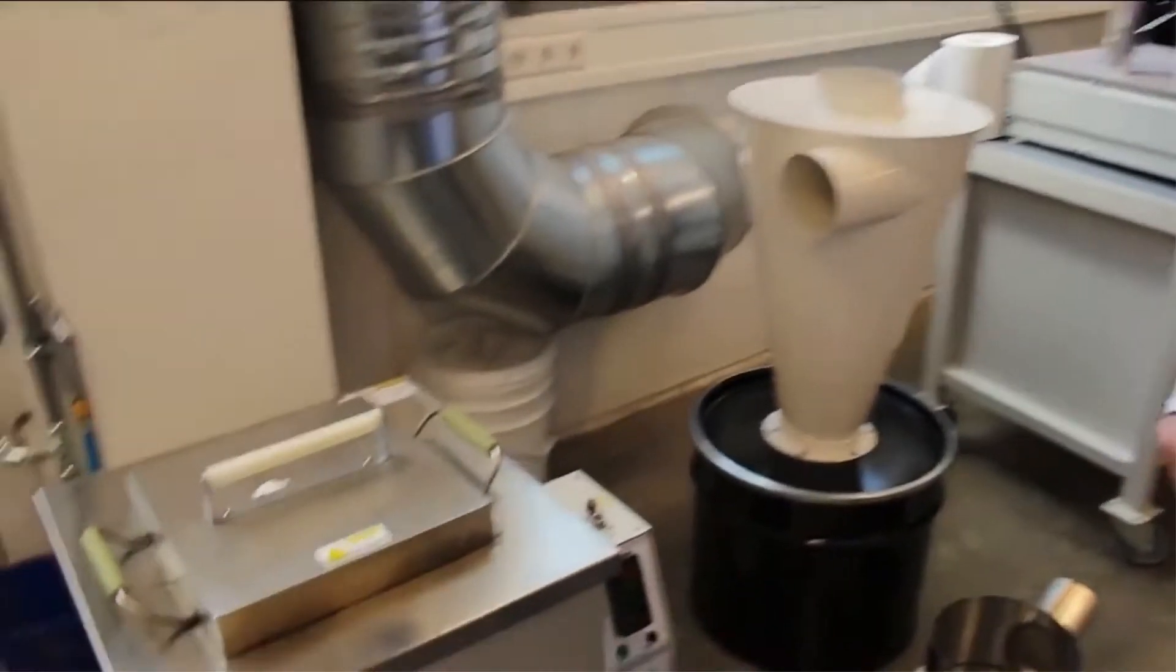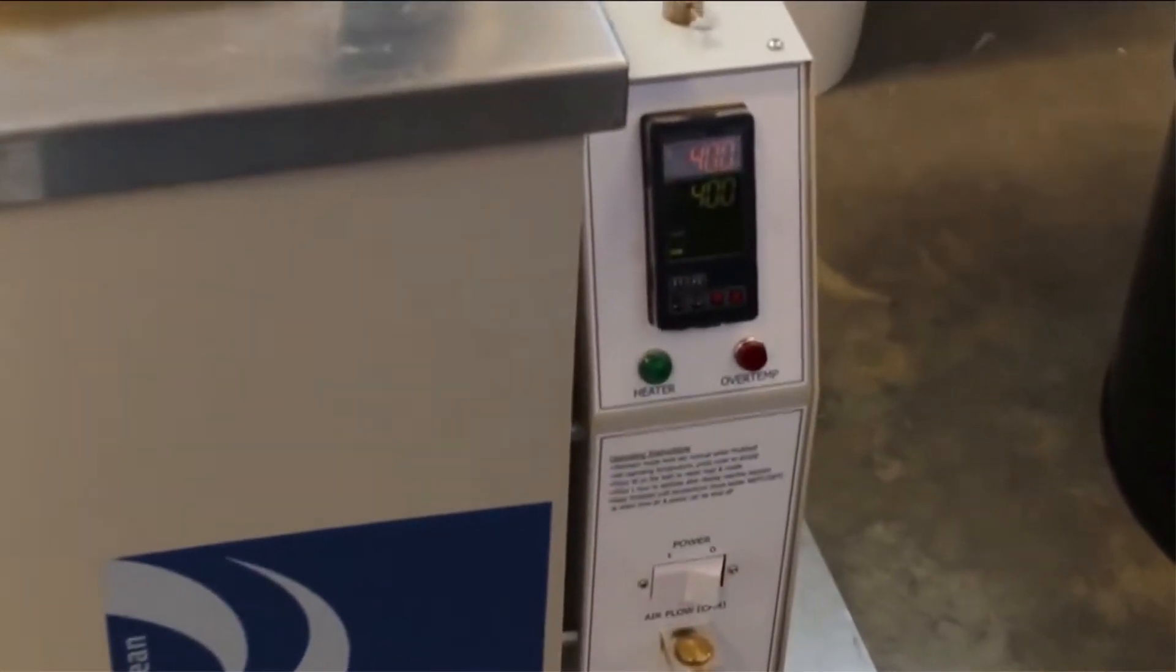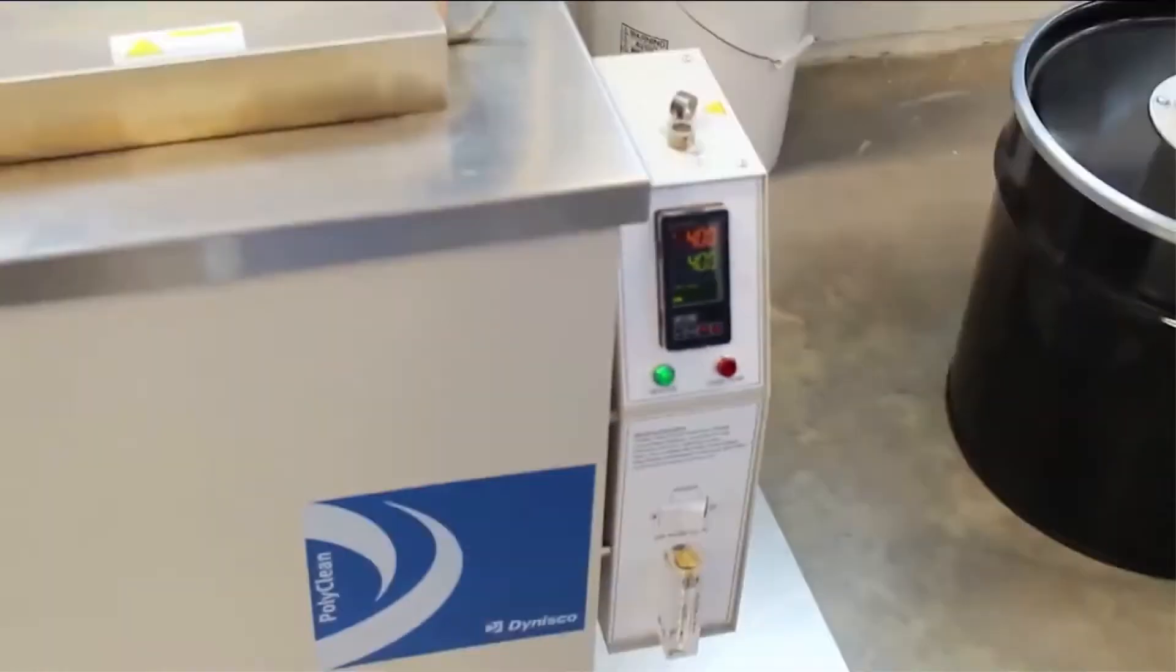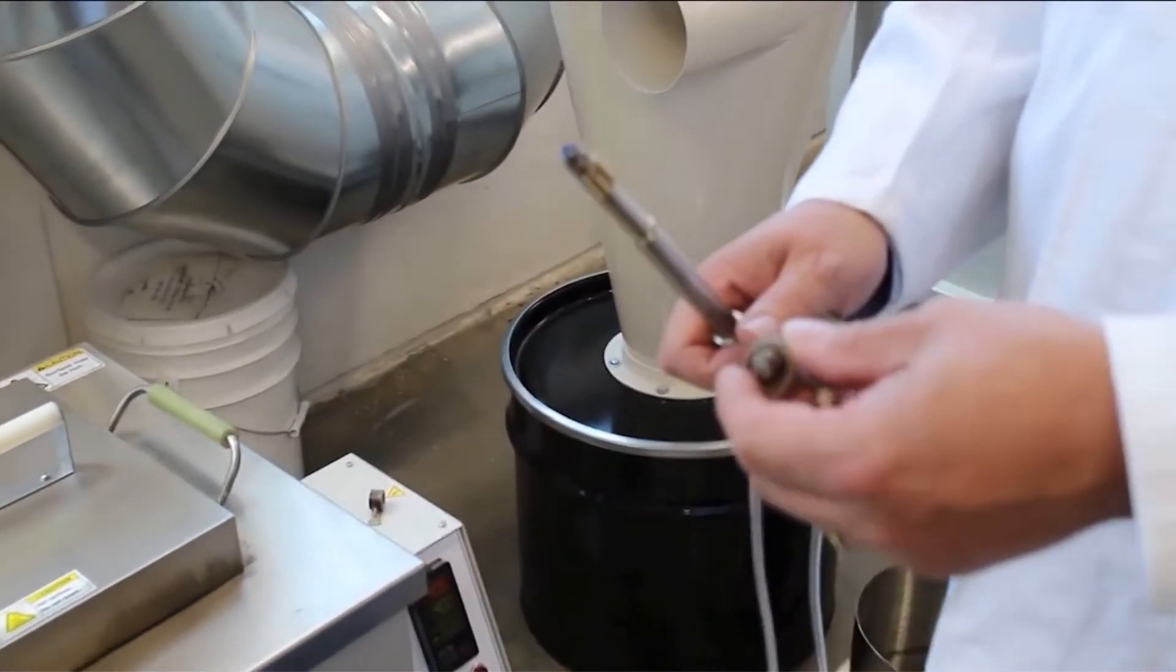I have set up a polyclean at 400 degrees Celsius for pressure sensors, and we are going to clean them for about eight minutes. First, I will put the stoppers to prevent the sensors from falling down completely inside the bath.